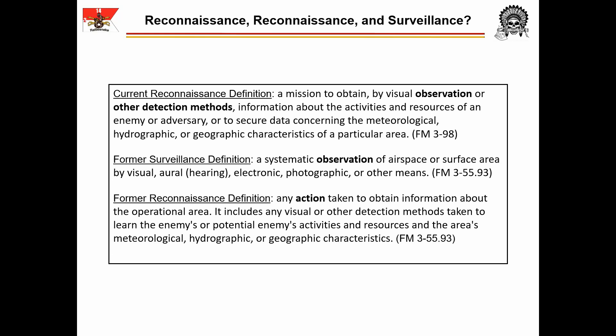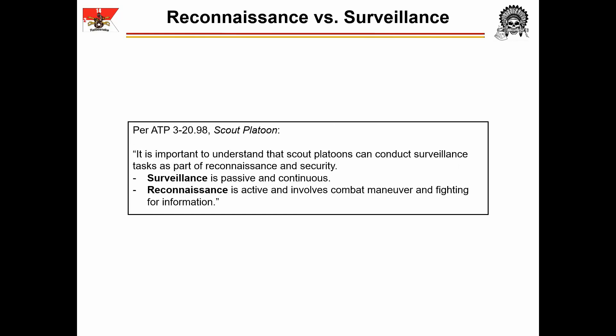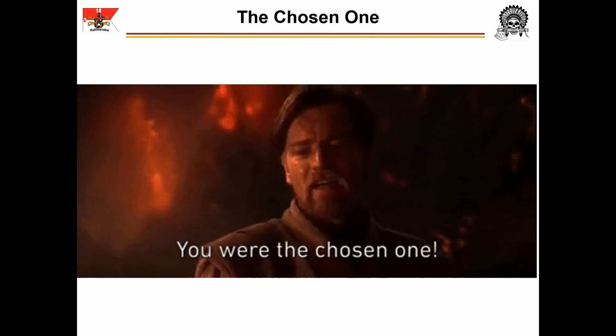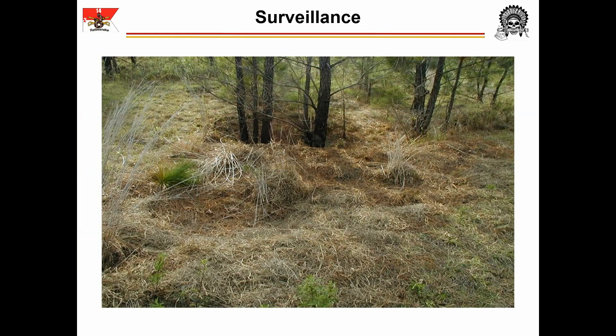That's a lot of words, and they don't always connect to what soldiers walking through the jungle need to do. As often happens, doctrine gets distilled at the tactical level, and ATP 3-20.98 has the best explanation. Surveillance is passive and continuous — I would also add that it is stationary. Reconnaissance is active, involves combat maneuver, and fighting for information. When you think of C-Troop, think of us as the reconnaissance-capable surveillance asset of the Brigade — the best of the best, the elite, the chosen one, to conduct surveillance for the Brigade.